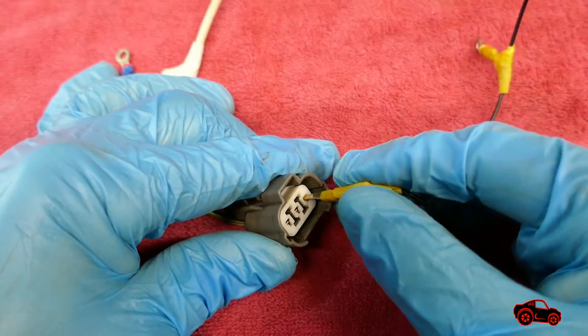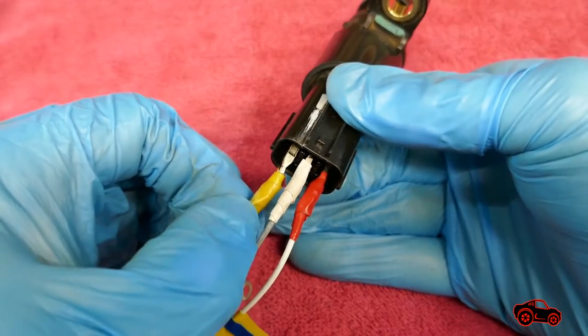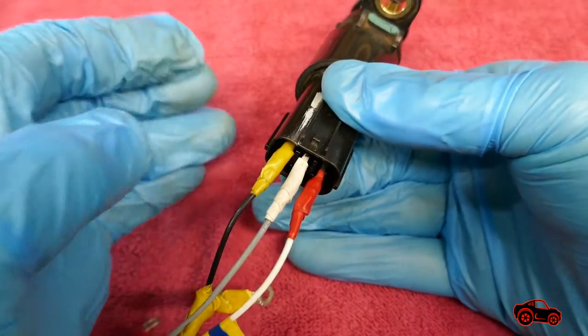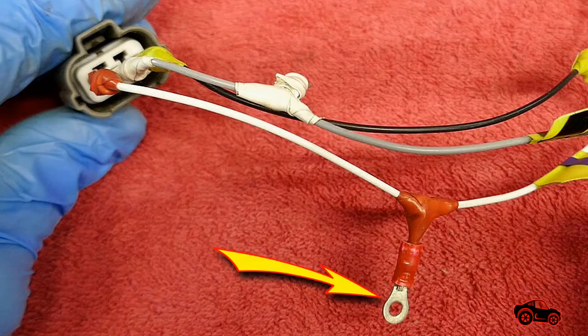Instead of back probing the connectors, I only tested the sensors with jumper wires. I made them to fit with the existing contacts of the VSS connector. Also, each jumper wire had the connecting eyelet on the side.